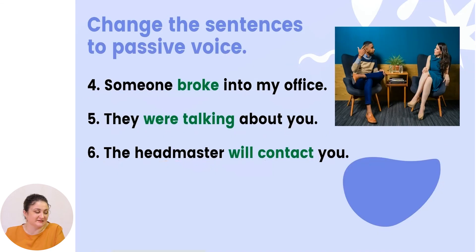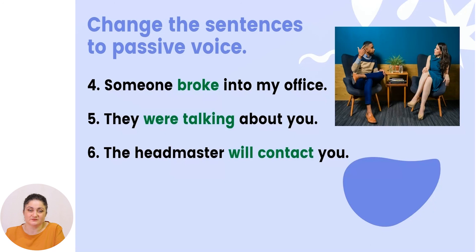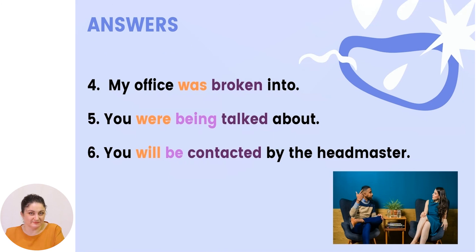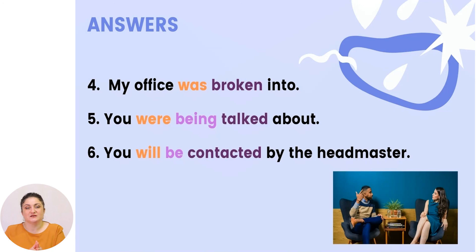Let us continue practicing. Four: 'Someone broke into my office.' Five: 'They were talking about you.' Six: 'The headmaster will contact you.' Pay attention to the highlighted form of the verbs, identify the tense, and identify the person or object that suffers the action. Answers: 'My office was broken into.' 'You were being talked about.' And 'You will be contacted by the headmaster.' You suffer and will suffer the action — it is directed toward you.